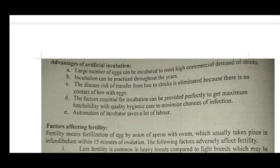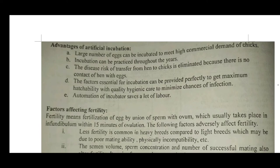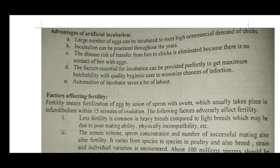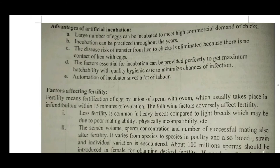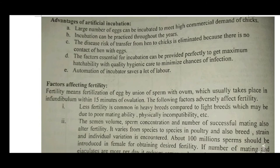In the artificial incubation method, the conditions for incubating eggs are fully controlled by machines called incubators. Advantages include: large numbers of eggs can be incubated to meet high commercial demands; incubation can be practiced throughout the year; disease risk of transfer from hen to chicks is eliminated because there is no contact of hen with eggs; and factors for incubation can be provided perfectly to get maximum hatchability with high-quality hygiene care to minimize chances of infection. Automation of the incubator also saves a lot of labor.